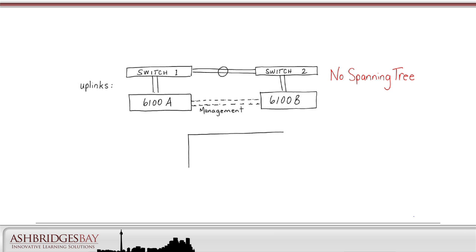The B series blades are housed in a 5108 chassis. The chassis has room for two 2104 IOM modules. Each IOM has four 10GB ports. We'll connect the A side IOM module to 6100A and the B side IOM module to 6100B. We would never connect an IOM module to both 6100s.